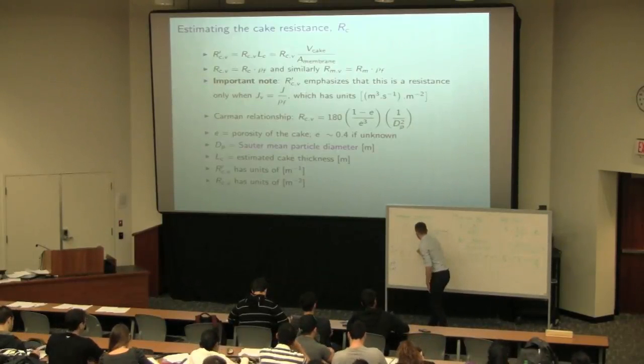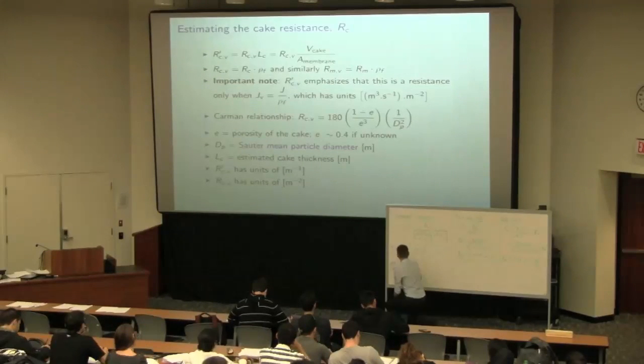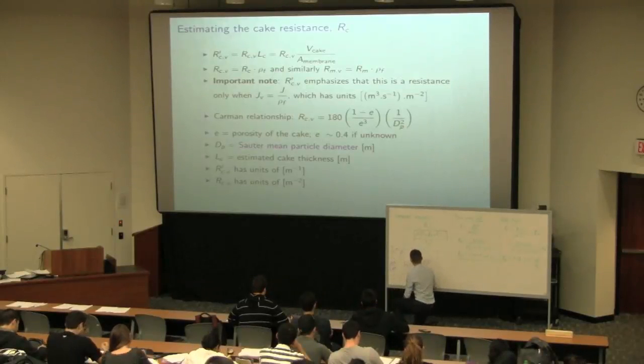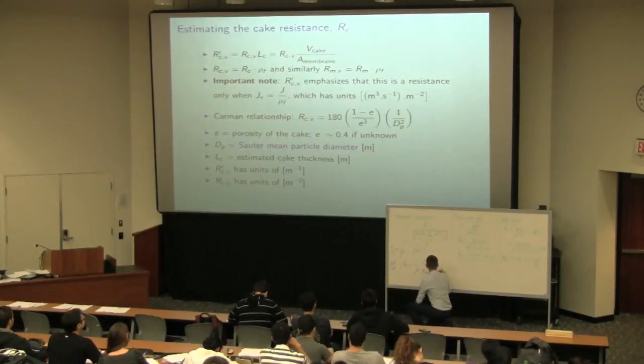So we have to divide this side by rho as well. And we can simplify that by writing JV is equal to the pressure drop times the viscosity, multiplied by Rm V dash plus RCV dash.